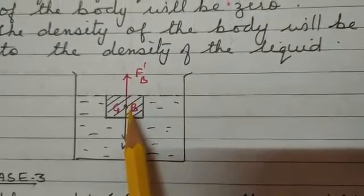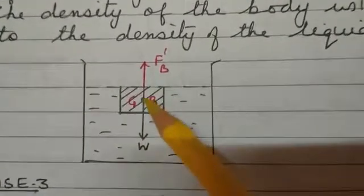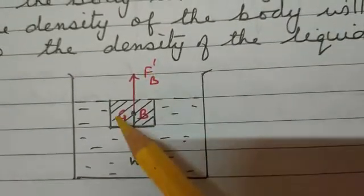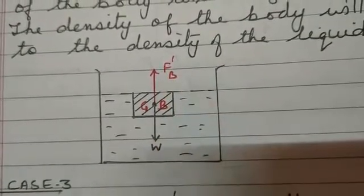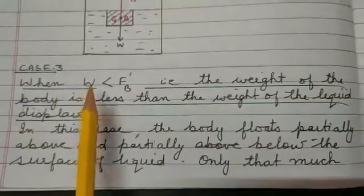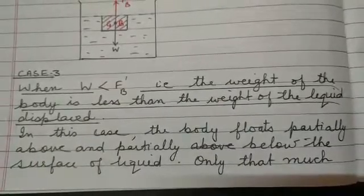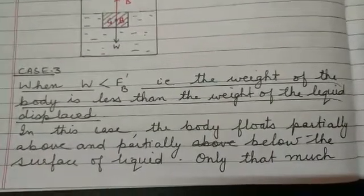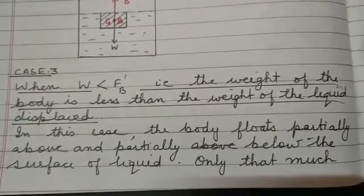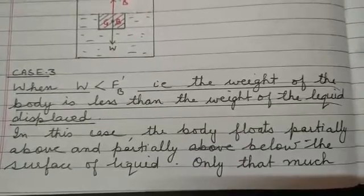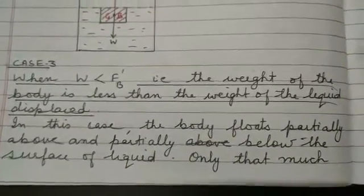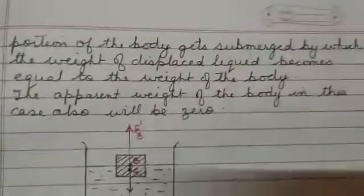In the second diagram, make the arrow for weight acting downward and the arrow for up thrust acting upward both equal, to indicate that weight and up thrust are equal. Case three: when the weight of the body is less than the up thrust applied by the liquid. In this case, the body floats partially above and partially below the surface. Only that portion of the body gets submerged by which the weight of displaced liquid becomes equal to the weight of the body.